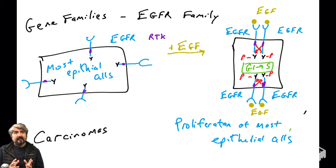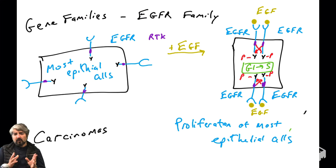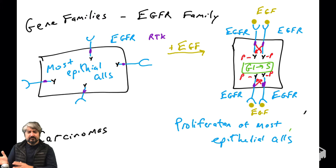Most human cancers are carcinomas — cancers that arise from epithelial tissue. So the EGFR family plays a very important role in most, but not all, human carcinomas, and we're going to see that here today.